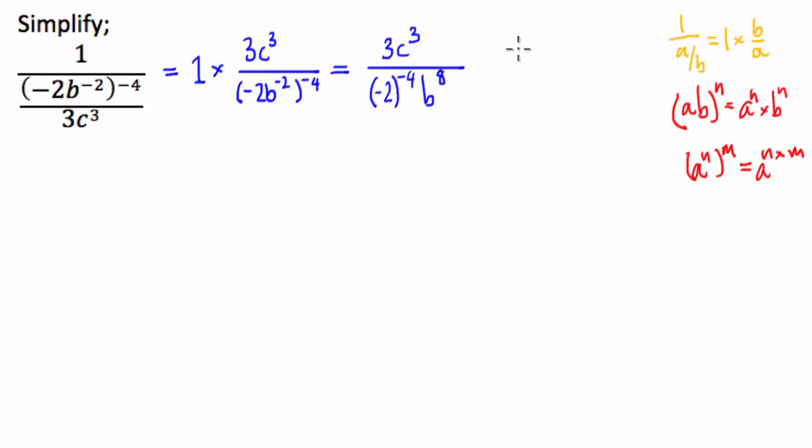So from here, what I'm going to do is use the fact that a number to a negative index is equal to 1 over that number to the positive index, or the reciprocal of that number, and take this negative 2 up to the top.